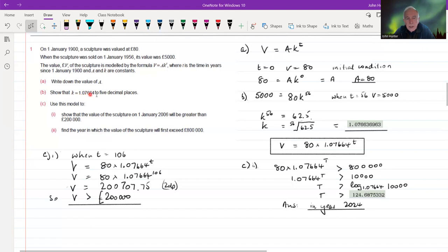Then it says, show that K equals 1.07, et cetera, to five decimal places. Well, we've got to the point where we say V equals 80K to the power of T. If we then take that equation and substitute T equals 56 and V equals 5000, which is what we've got from this statement, then when we rearrange that, we're going to get K to the power of 56 equals 62.5. If we take the 56th root of 62.5—that's something you do every day, but your calculator will handle that quite happily—that's going to give you K of 1.076, et cetera. So that is it. We now know that our fully resolved equation is V equals 80 times 1.07664 to the power of T.